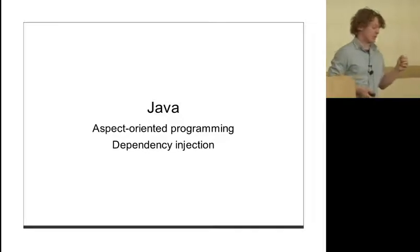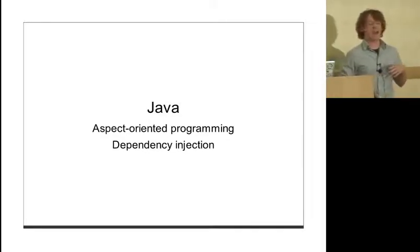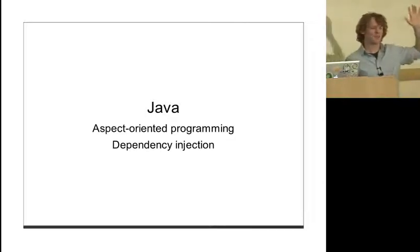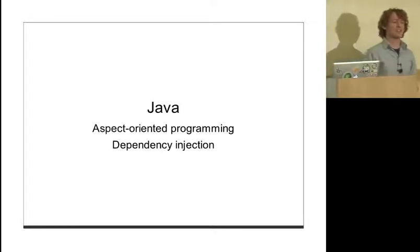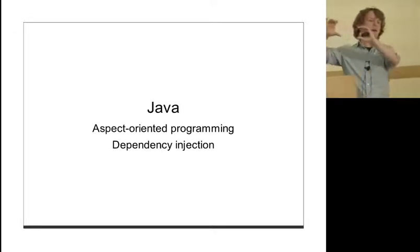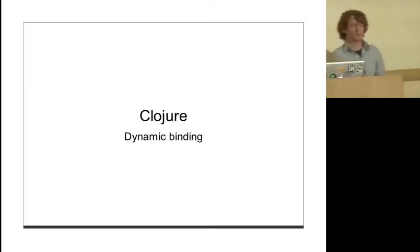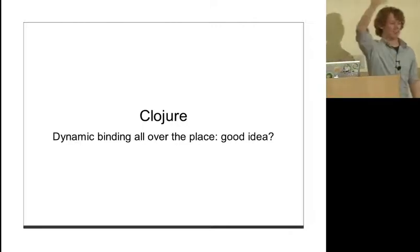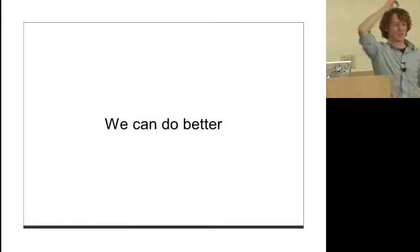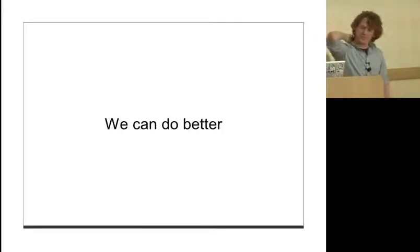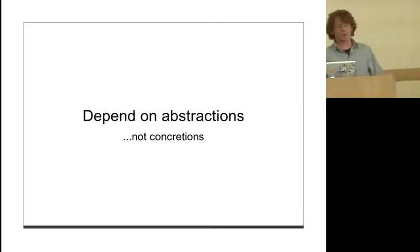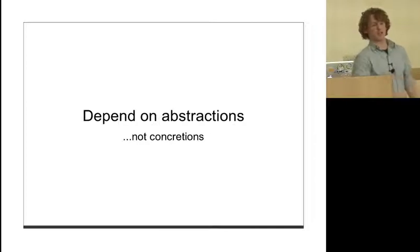One way to swap out these low-level details - in Java land we could use aspect-oriented programming or dependency injection. In Clojure, we could use dynamic binding to rebind the socket communication, rebind those send and receive functions. But is this a good idea? Who's felt the pain of dynamic binding all over the place where you're not really sure what's going on? I've definitely written code that became problematic to reason about. So I think we can do better.